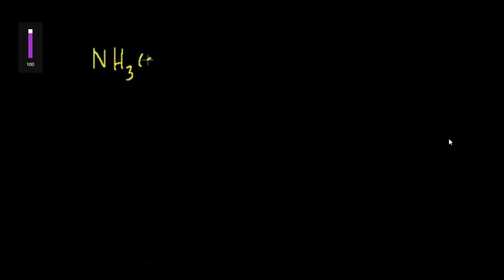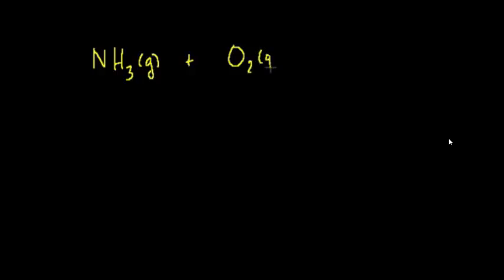Let's say we have some ammonia gas, NH3 — it's a gas, that's why the G is in parentheses. And we combine that with some oxygen, molecular oxygen, also a gas. That reaction produces some nitrogen monoxide, NO. There's only one oxygen there.